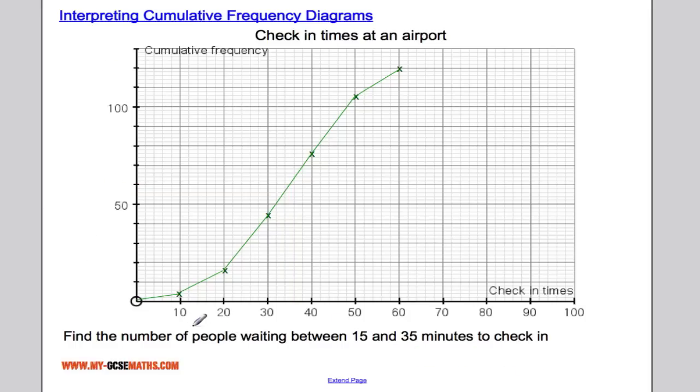And we're asked to find the number of people waiting between 15 and 35 minutes. So again, we go to 15 on the bottom, read up and across. Then go to 35 minutes, read up and across.